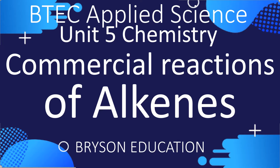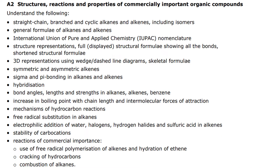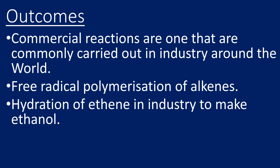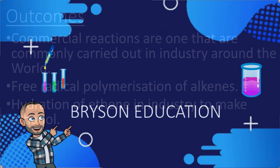Welcome to my channel on chemistry lessons. This is BTEC Applied Science, Unit 5 Chemistry, and we're looking at the commercial reactions of alkenes. This fits on the specification under learning aim A2 — reactions of commercial importance. We're looking at free radical polymerization and the hydration of ethene. By the end of this video you're going to know those two important reactions of alkenes, which are very common reactions carried out in industry around the world.